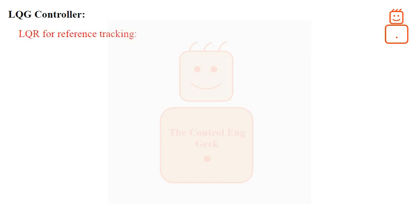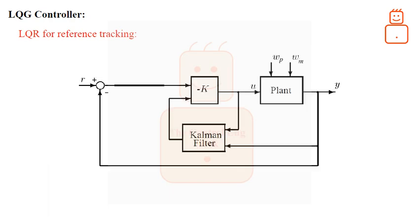Now, as we know the definition and the involved equations in the LQG problem, I can introduce the tracking LQG. For the LQG controller, it is not easy to see where to position the reference input R and how integral action may be included. One strategy is illustrated in the following figure: given a reference R and we want the output Y to track it, we can simply integrate the control error R minus Y, and then the regulator K is designed for the plant augmented with these integrated states.